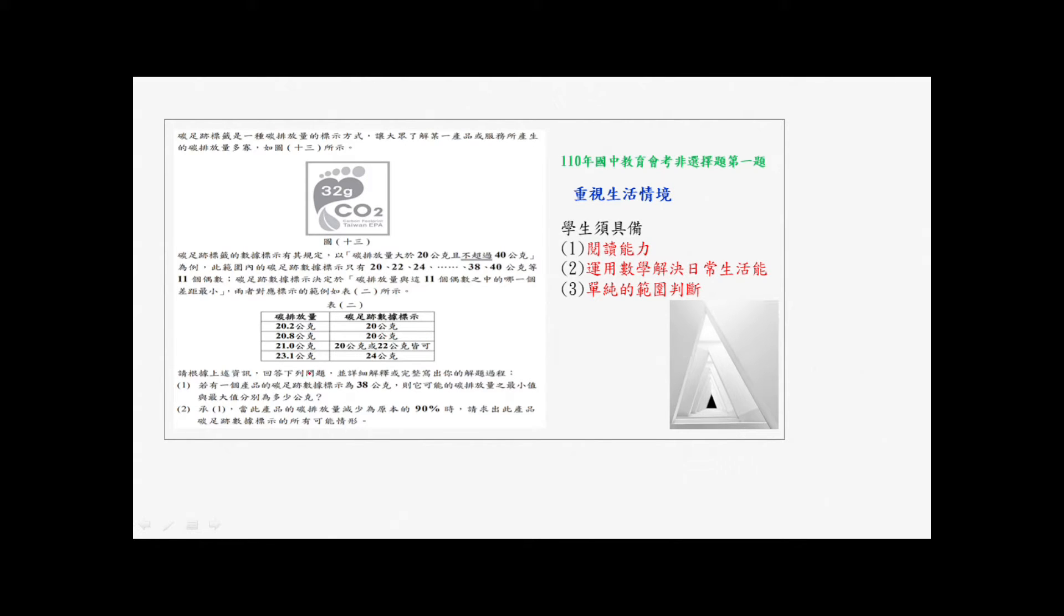比如碳排放量20.2公克,那碳足迹数据标示就是20公克。21.0的话就是20公克或22公克都可以。23.1公克就最接近24公克。请根据上述资讯回答下列问题并详细解释或完整写出你的解题过程。第一小题:若一个产品的碳足迹数据标示为38公克,则它可能的碳排放量的最小值与最大值分别为多少公克。